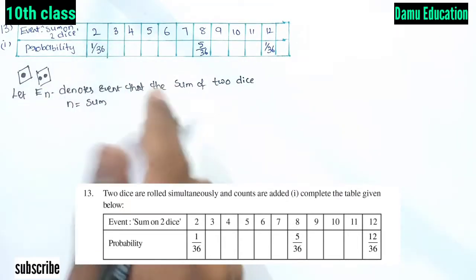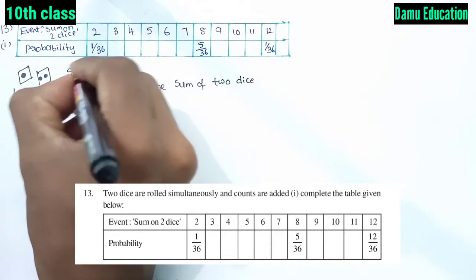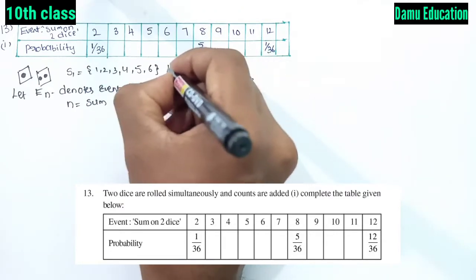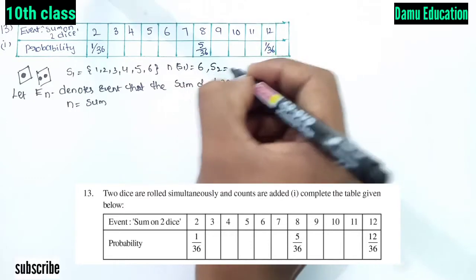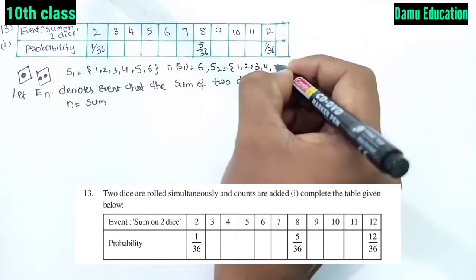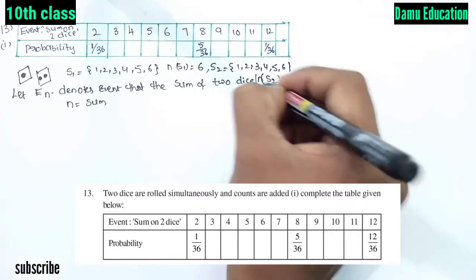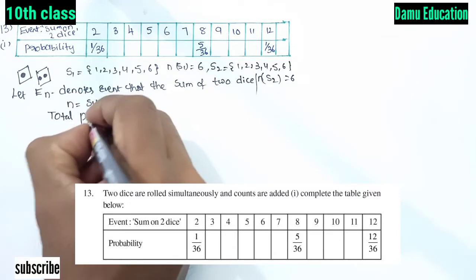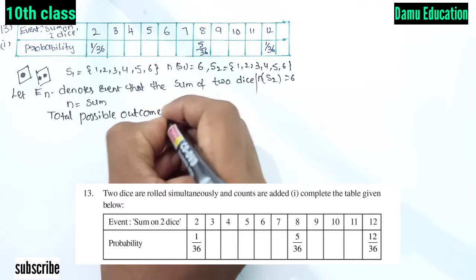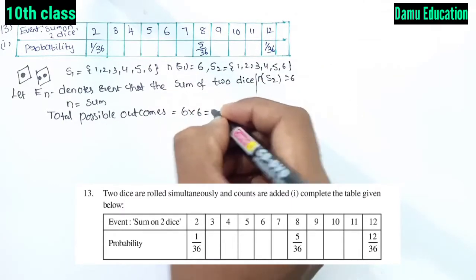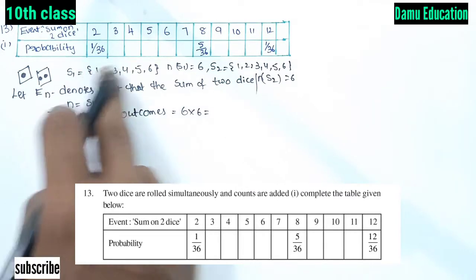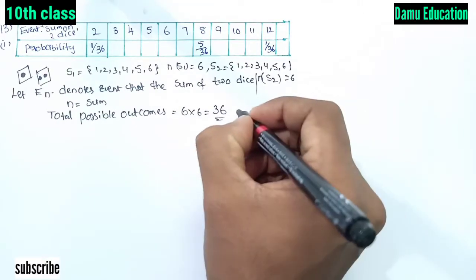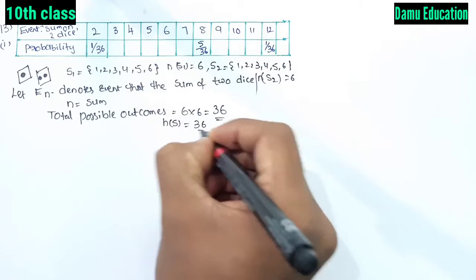When one die is rolled, the sample space S1 is {1, 2, 3, 4, 5, 6}, so n(S1) = 6. For the second die, S2 is also {1, 2, 3, 4, 5, 6}, so n(S2) = 6. By taking the Cartesian product, the total possible outcomes n(S) = 6 × 6 = 36.